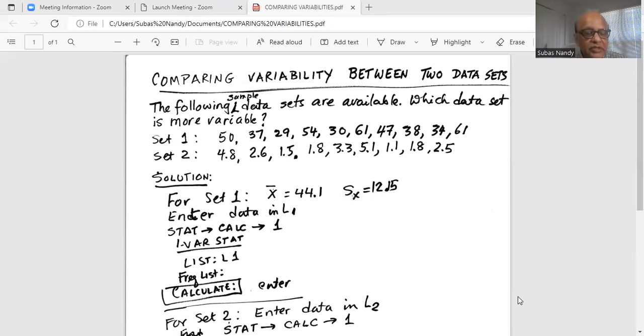Now we press the stat button again. Highlight calc in the top row, and then select number one, one var stats. Now the first line should be L2 because now I want to calculate the mean and the standard deviation for the data set in L2.